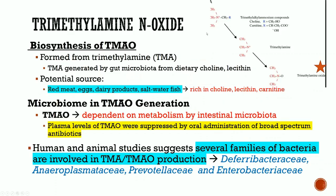For TMAO biosynthesis, trimethylamine is converted to trimethylamine oxide by enzymes present in bacteria. The precursors are usually choline, lecithin, and carnitine — found in red meats, eggs, dairy products, and saltwater fish. The microbiome plays a central role in generating TMAO; plasma levels of TMAO were suppressed by oral administration of broad-spectrum antibiotics, meaning that by knocking out the gut microbiota you can decrease TMAO levels. Several families of bacteria have been shown to play a role in TMAO production.